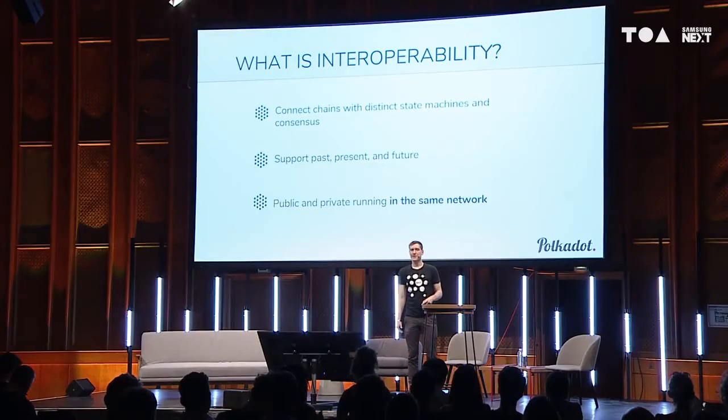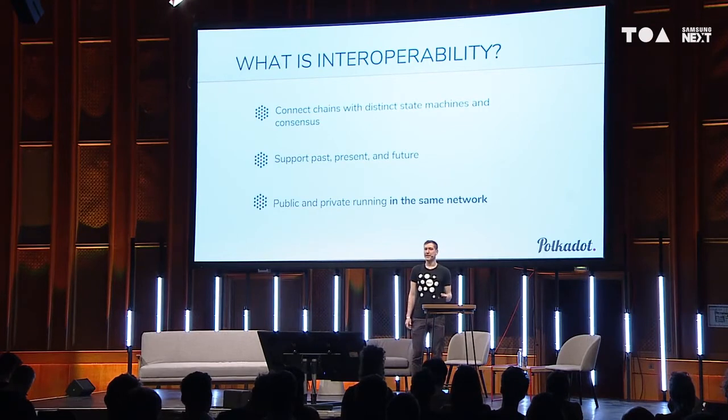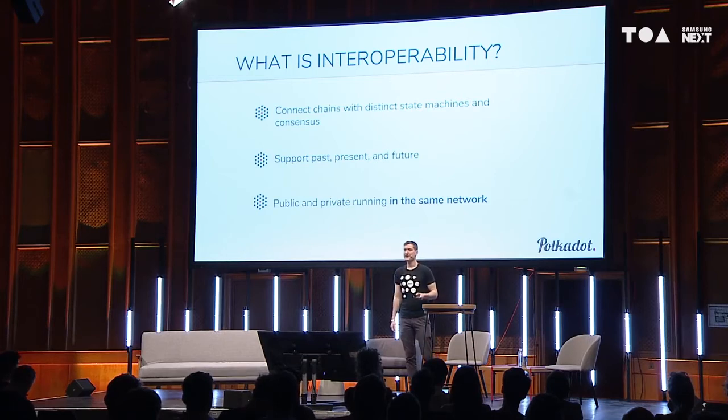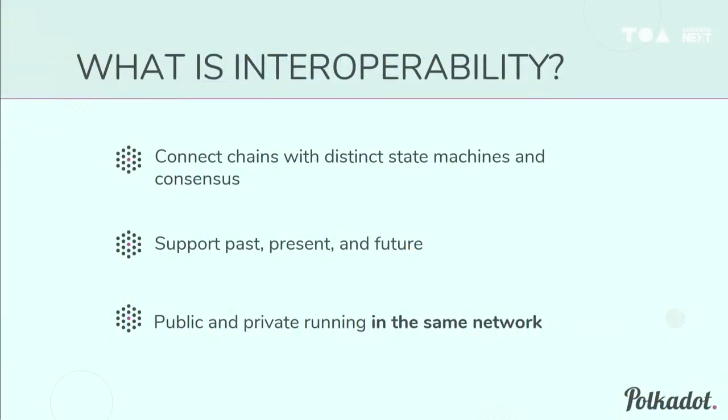So what is interoperability? The goal is to connect blockchains with distinct state machines and consensus. And when I say that, I also mean to support things that we haven't even thought of yet — supporting the past, present, and future. Supporting things that have already been built like Bitcoin and Ethereum, supporting what we think is possible now but hasn't been built, and also the future — state machines and consensus systems that we haven't even thought of yet, but over the next ten years will probably be invented. We want those things to be integrated into an interoperability system as well.